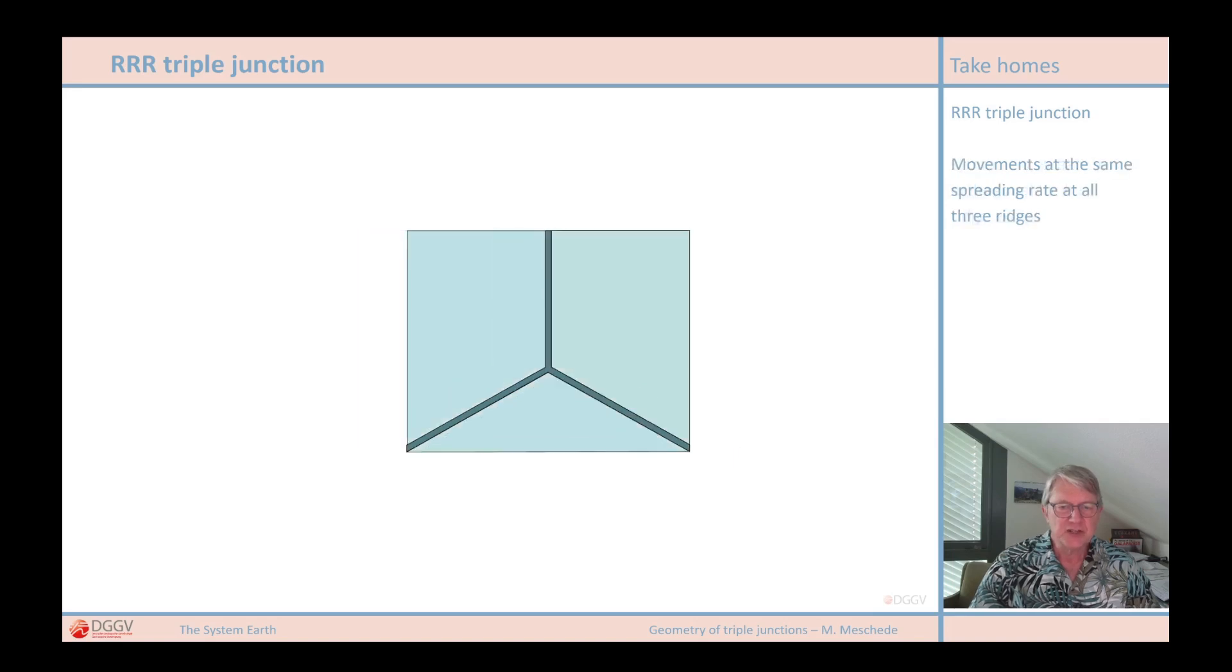In general, we can say, and this is valid for all spreading zones, that the direction of spreading at the mid-oceanic ridges is in any case symmetrical and always takes place perpendicular to the ridge axis.